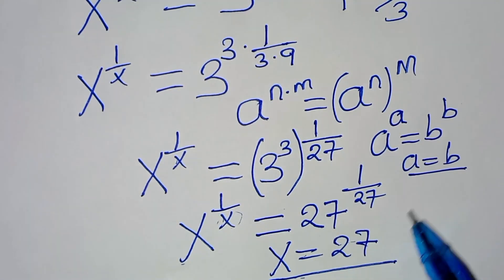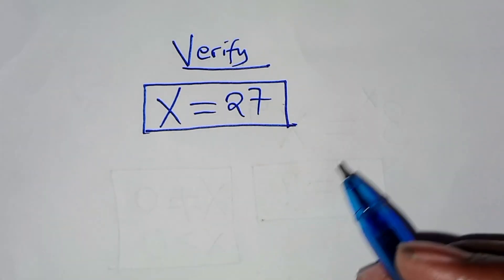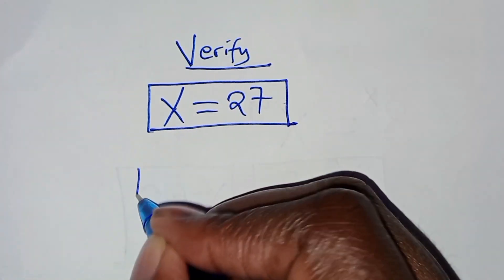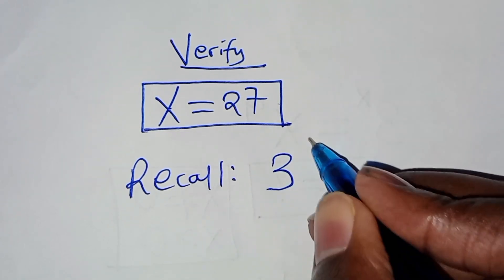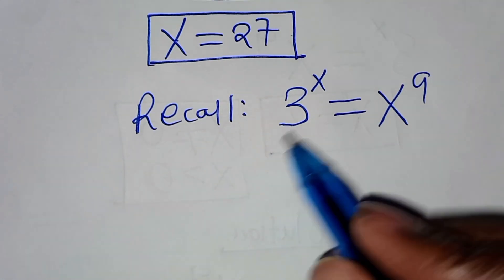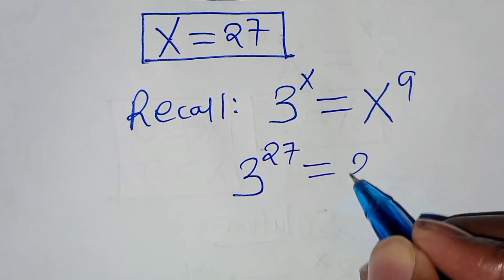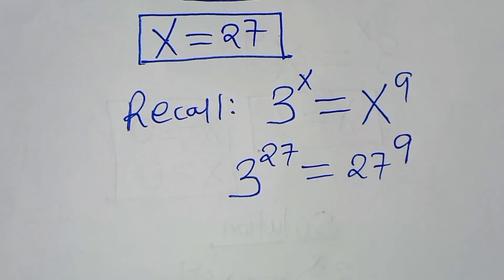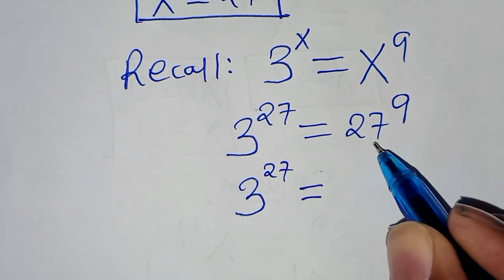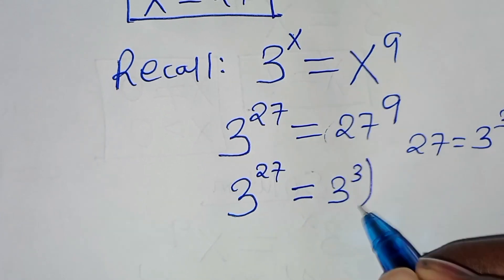The next step is to verify that this value of x satisfies the equation. Let's verify that x equal to 27 satisfies the equation. Recalling 3 to the power of x equal to x to the power of 9, substituting x equals 27 gives us 3 to the power of 27 equal to 27 raised to the power of 9. We can express 27 as 3 to the power of 3, so the right side becomes 3 to the power of 3 raised to power 9.